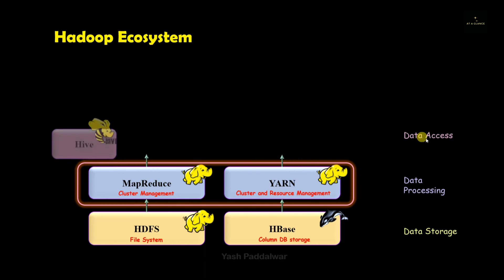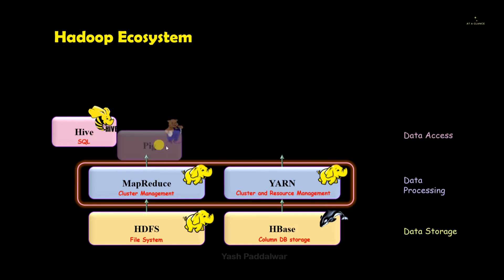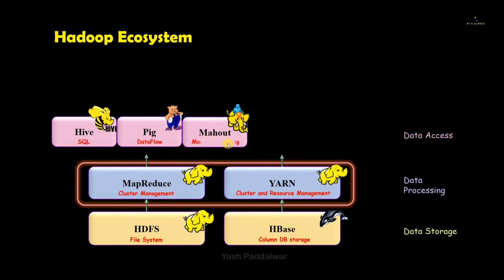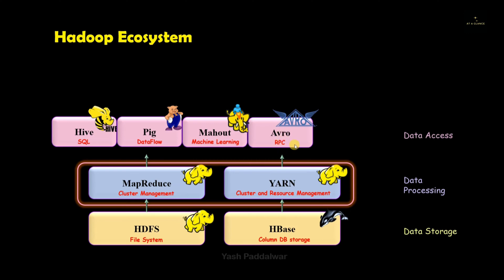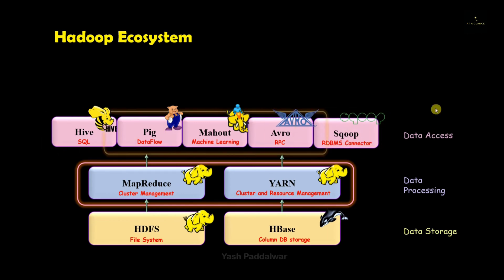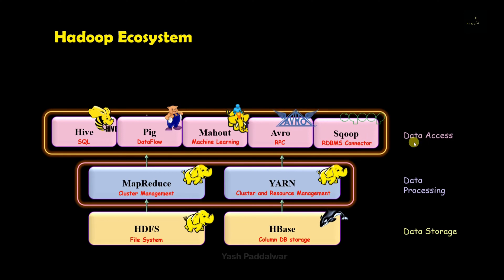The next section is data access. This contains components like Hive, which is an SQL-like interface; Pig, which is for data flow; Mahout, which is an interesting component; Avro; and Sqoop, which acts as an RDBMS connector. Together these all contribute to the data access section.